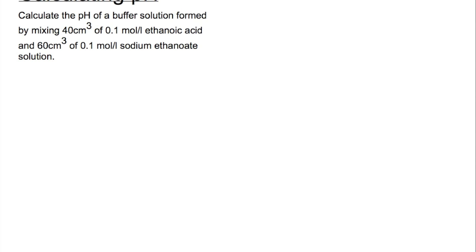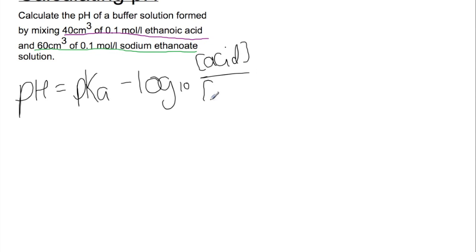So looking at our first example here we have calculate the pH of a buffer solution formed by mixing 40 cm³ of 0.1 molar ethanoic acid and 60 cm³ of 0.1 molar sodium ethanoate. So the ethanoic acid is our acid and the sodium ethanoate is the salt. So first we'll start by writing out our equation. pH equals pKa minus log to the base 10 of the concentration of acid divided by the concentration of salt.